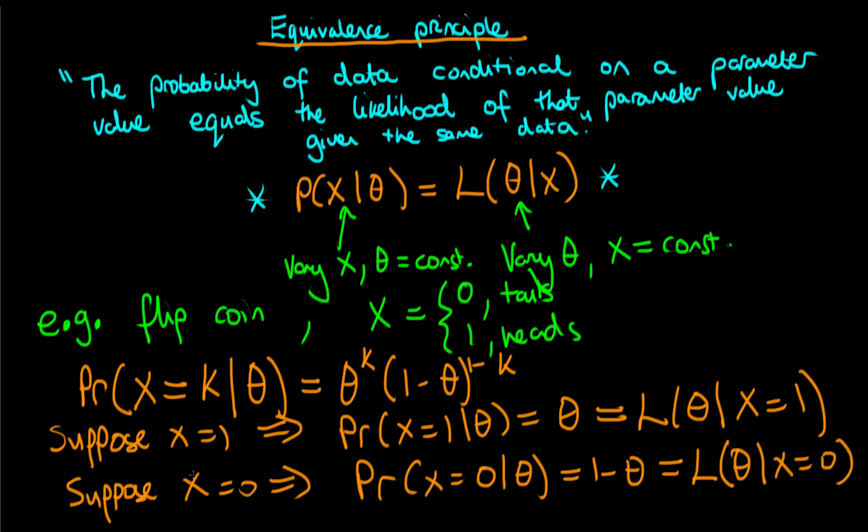And we can see here when we vary the data, so we go from x equals zero to x equals one, then if we sum together the two probabilities here we get one. In other words our object behaves as a valid probability distribution.